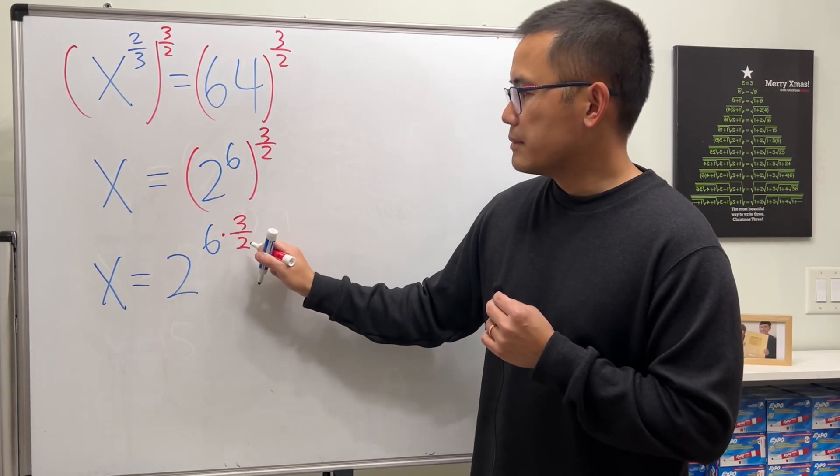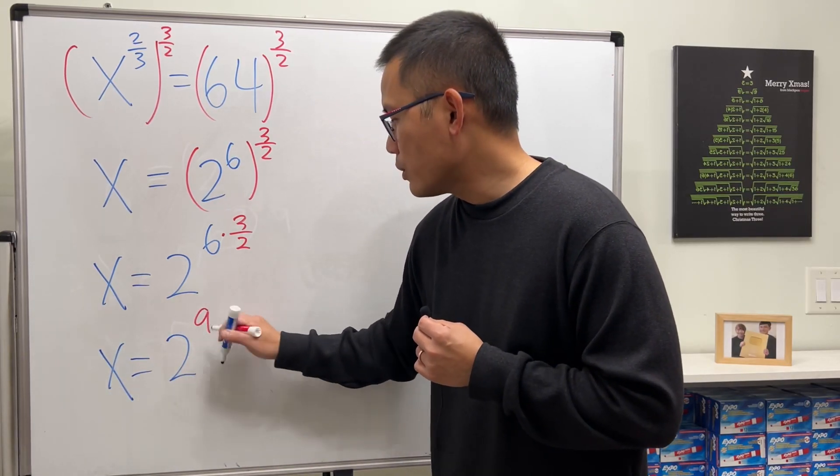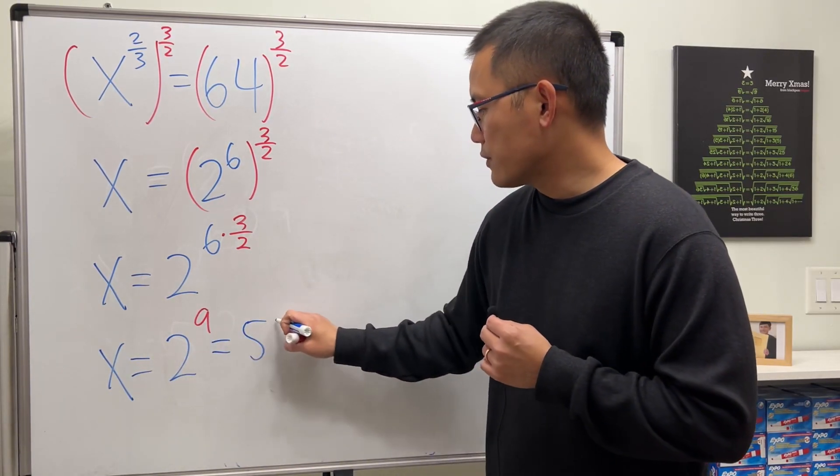And 6 times 3 over 2 is just equal to 9, so x is equal to 2 to the ninth power, and you can work that out is 512.